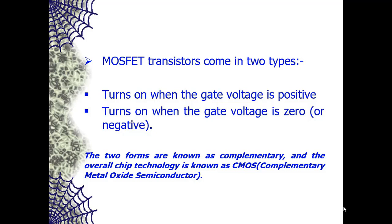MOSFET transistors come in two types, both used in digital logic. One type turns on when the gate voltage is positive; the other turns on when the gate voltage is zero. These two complementary forms give rise to the overall chip technology known as CMOS — Complementary Metal Oxide Semiconductor. The chief advantage of CMOS is that circuits can be designed to use extremely low power.